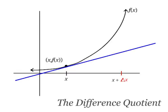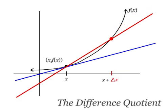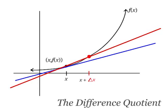Watch on this animation as the delta x goes from really big to really small. The red secant line comes closer and closer to the blue tangent line.